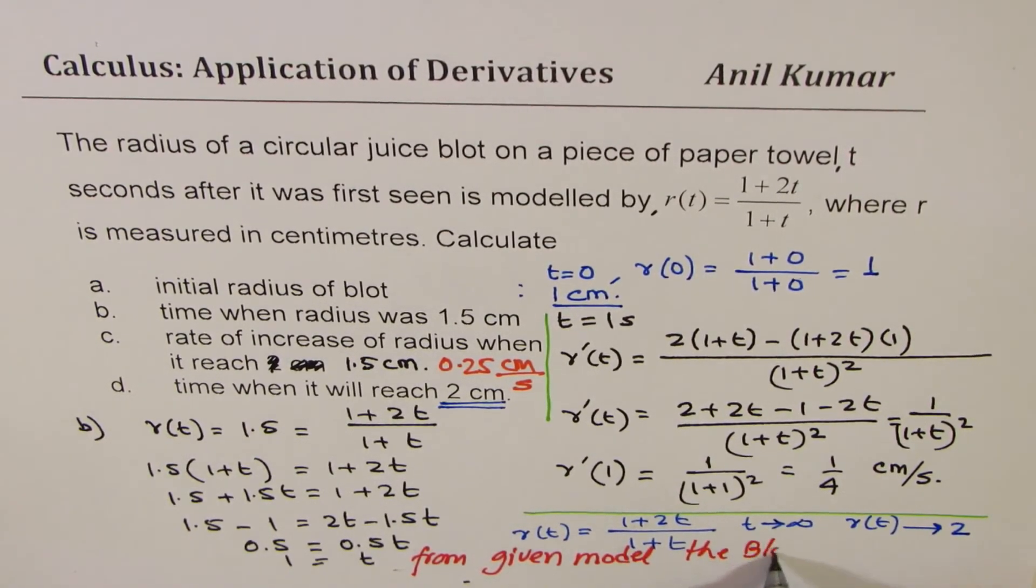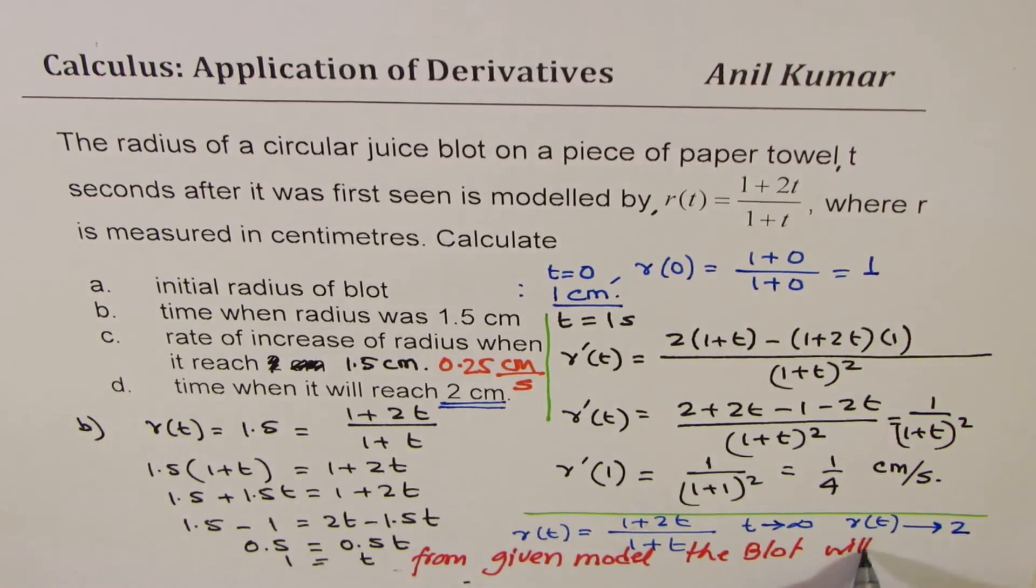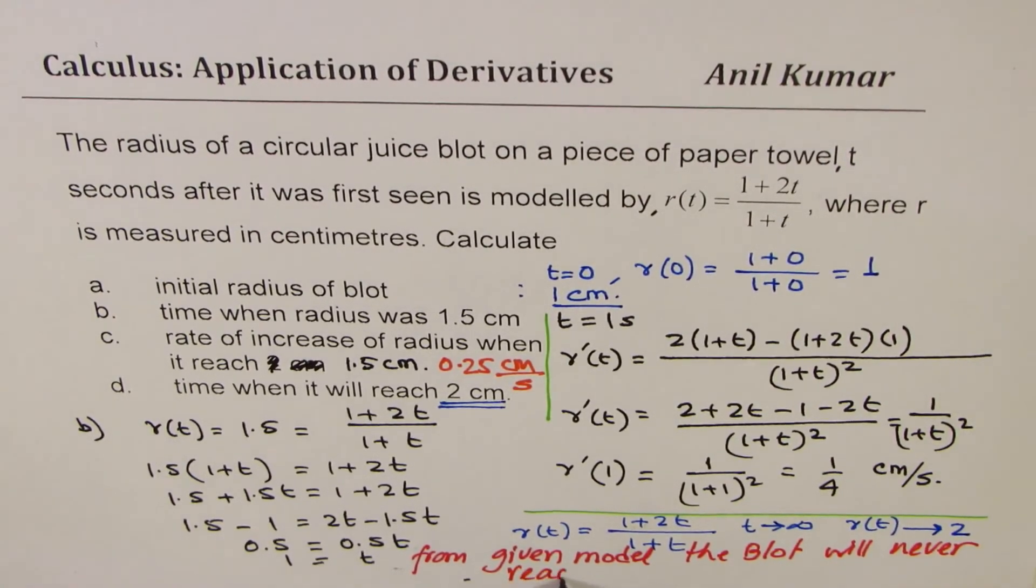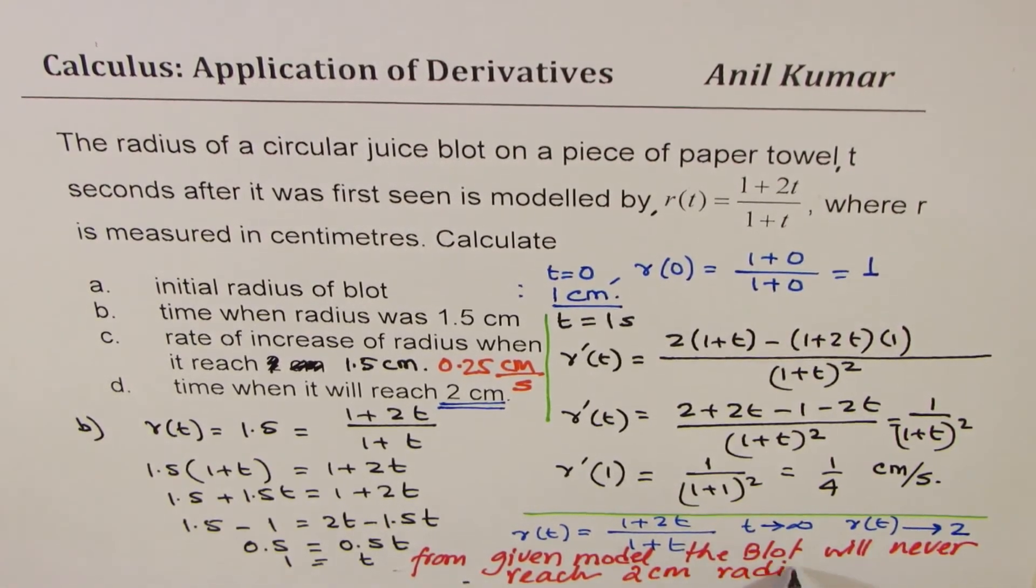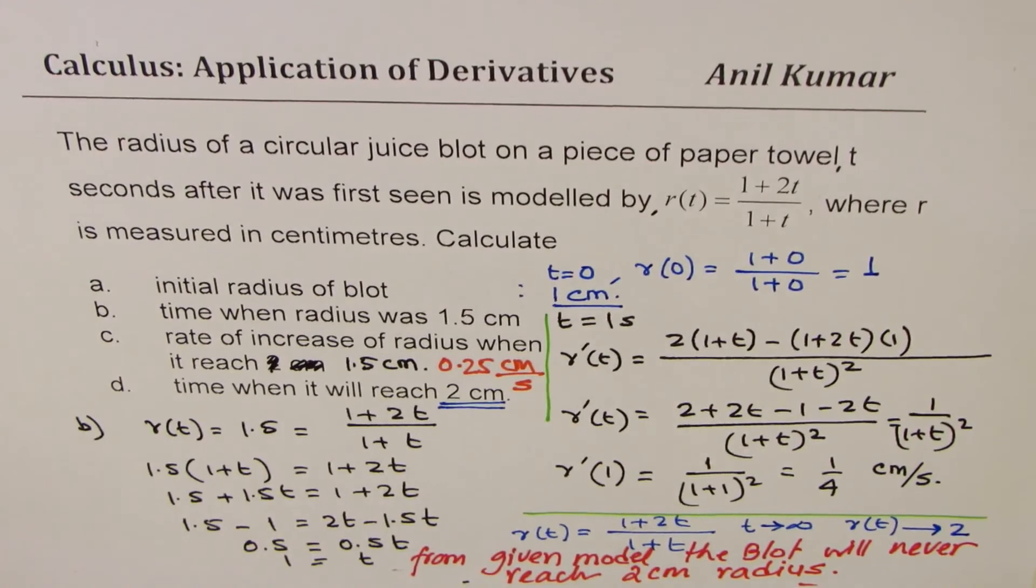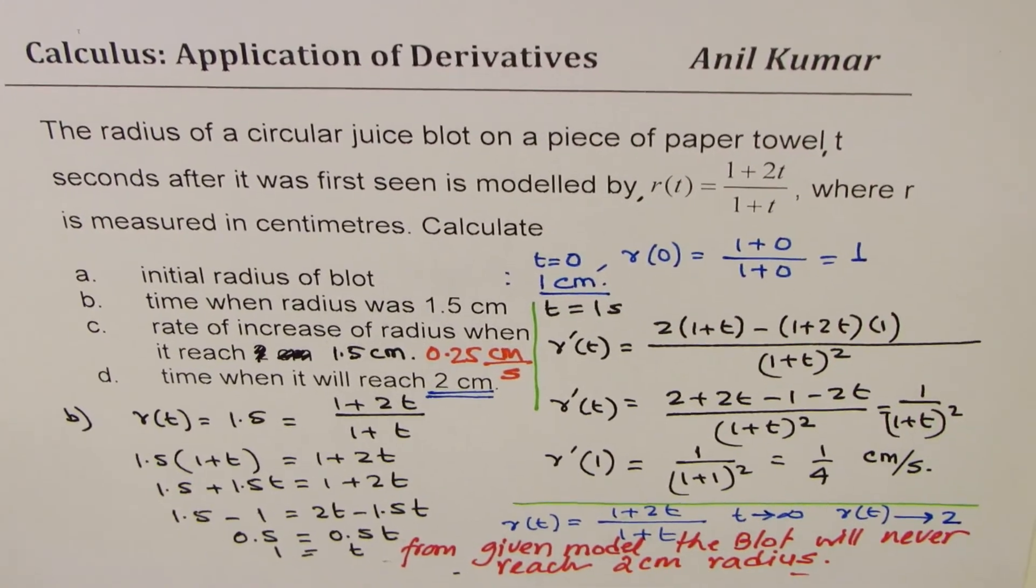the blot will never reach 2 centimeter radius. Is that clear? It's a rational function where 2 is your horizontal asymptote.